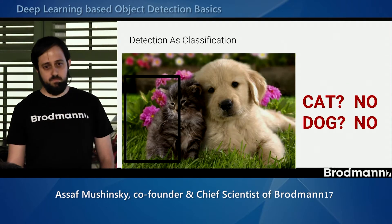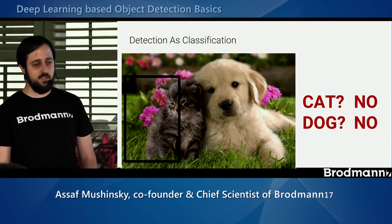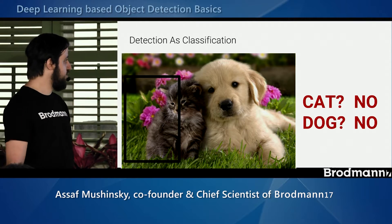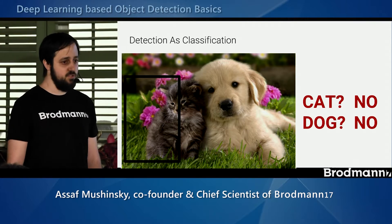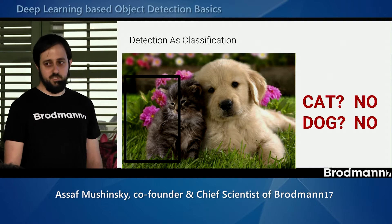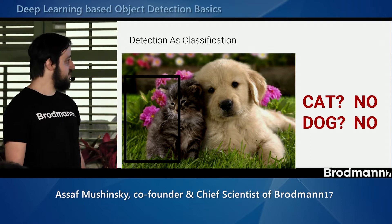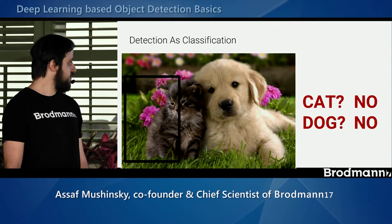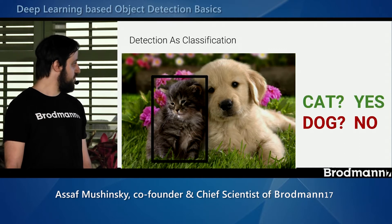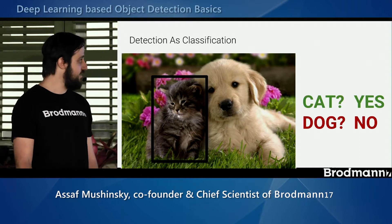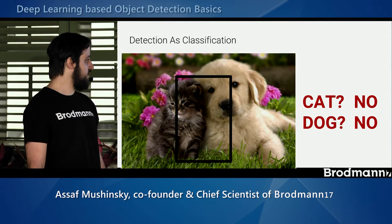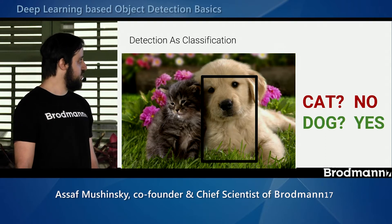So we can try to do this as a classification. Basically we run a sliding window over the image and at every region we decide if there is an object there and which object it is. For example, we can see that this window contains a cat, this window contains none of the objects, and this one is a dog.